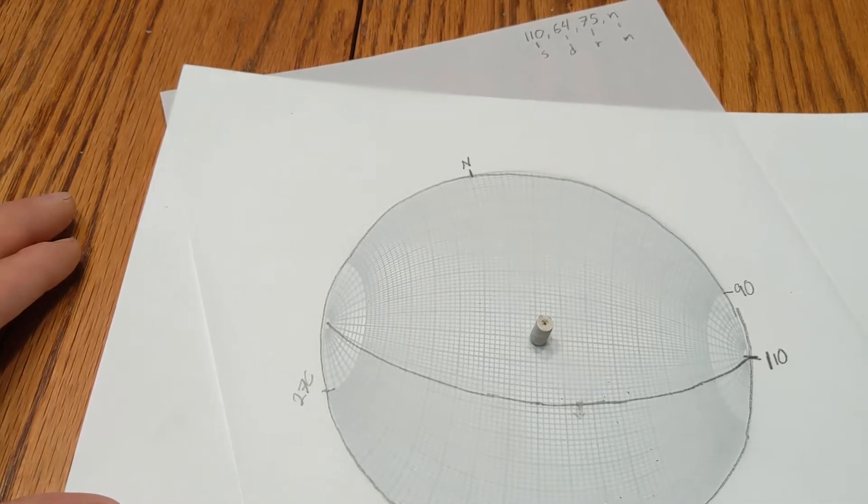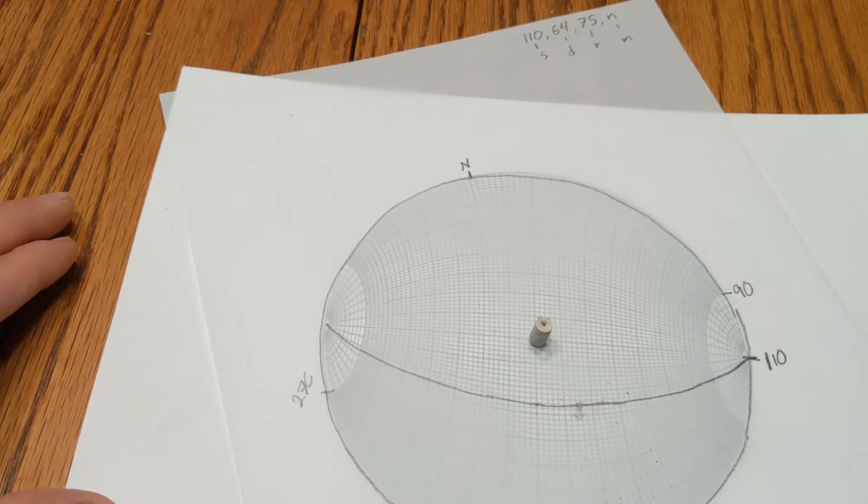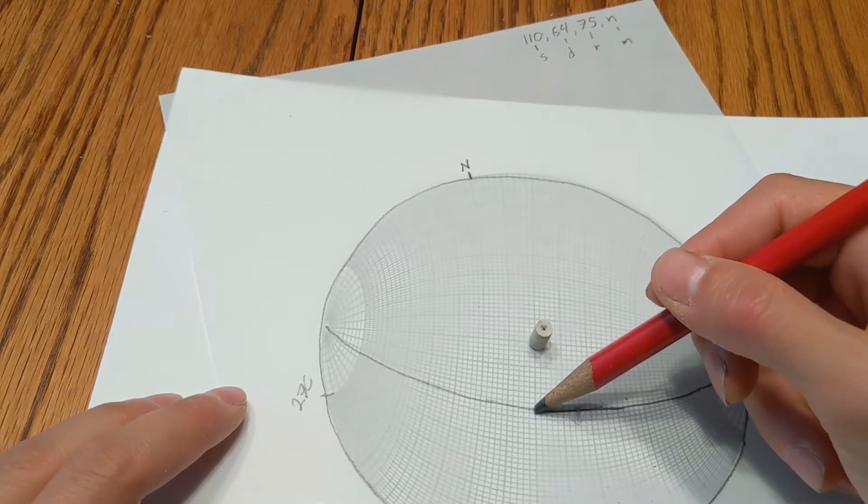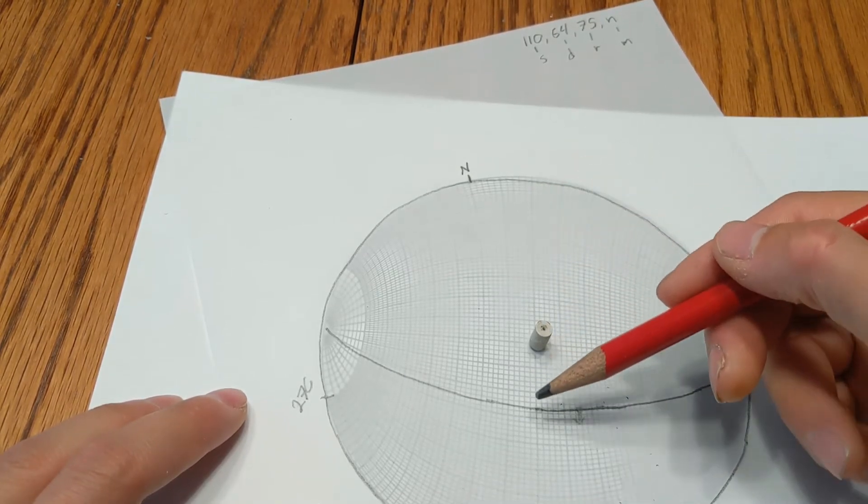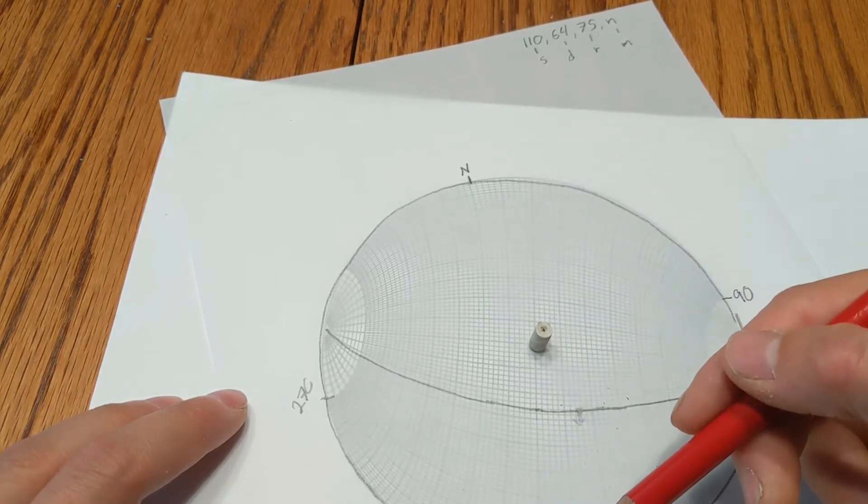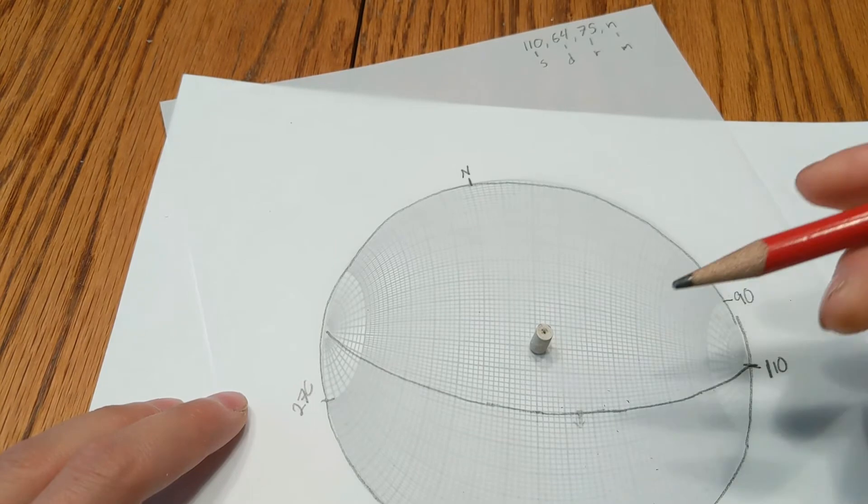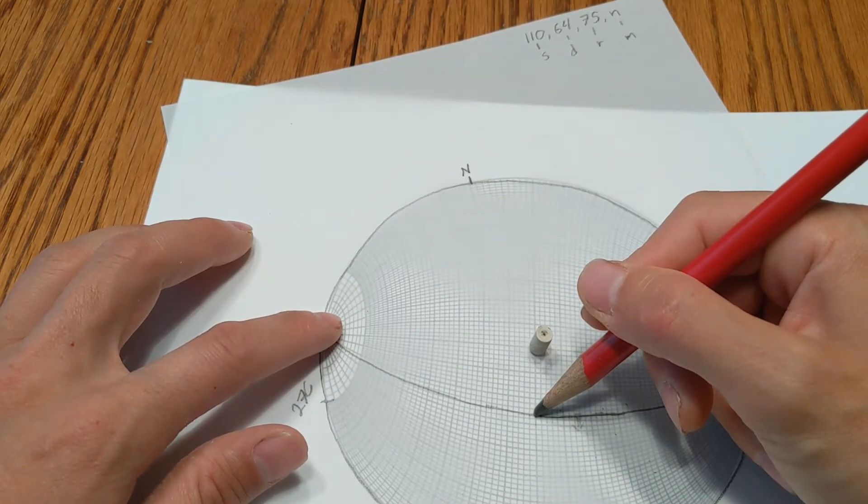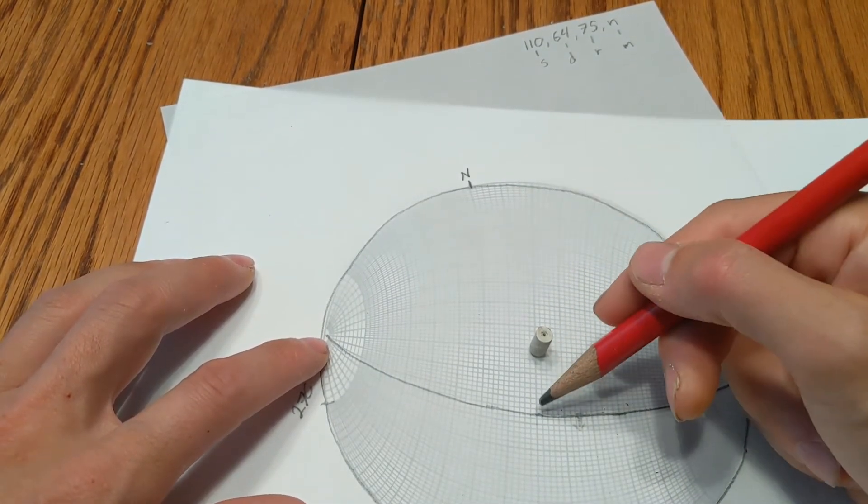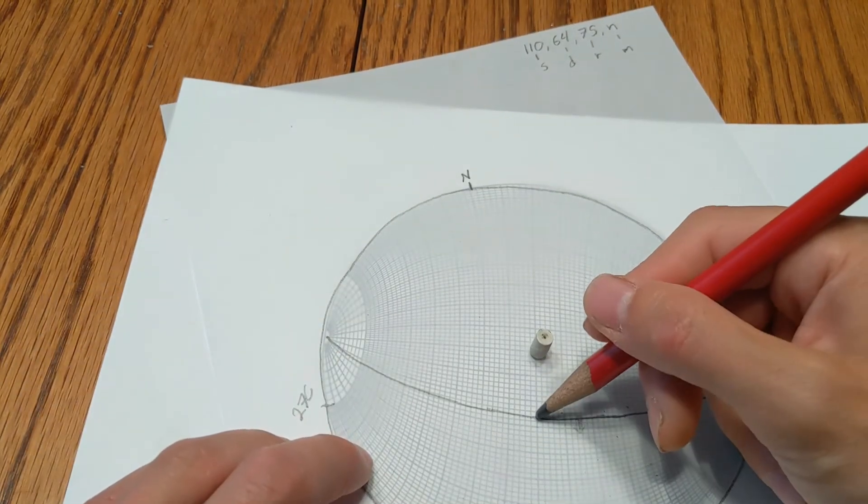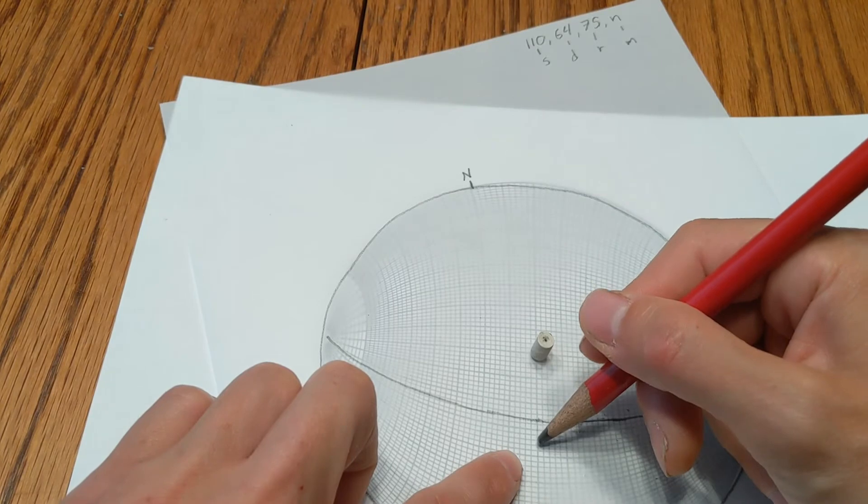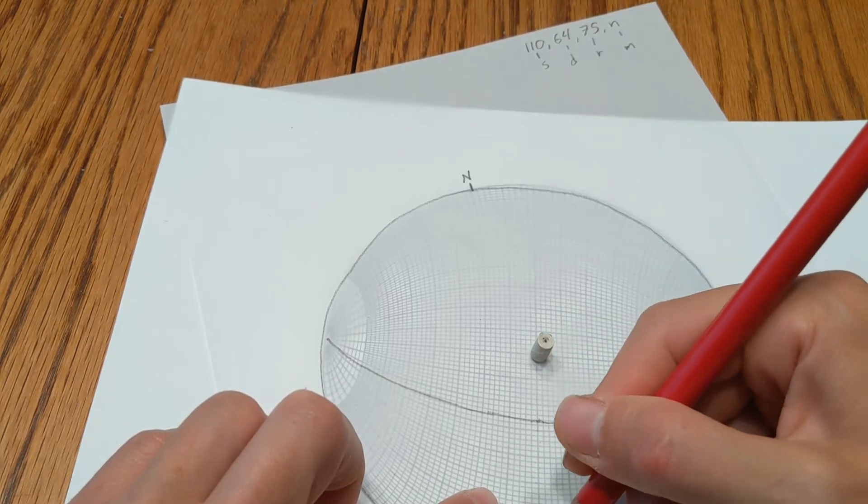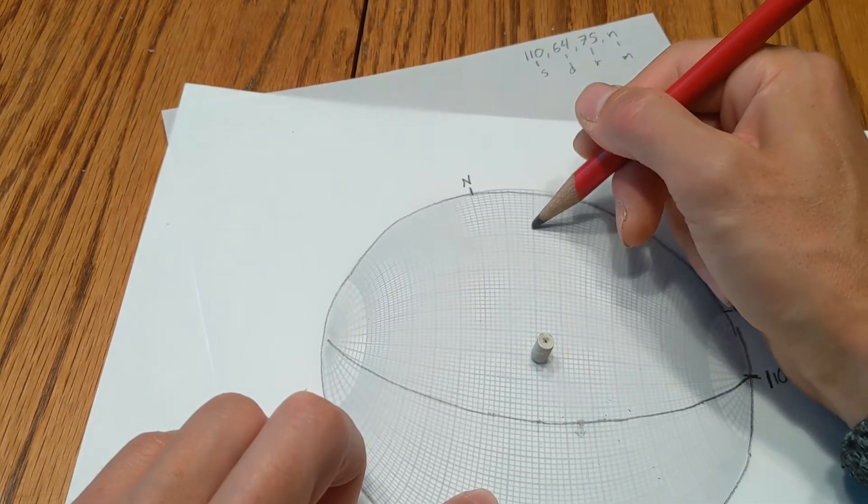Alright, so the next step is to plot the pole to the plane. And to do that, we go from this point right here. So this middle line, we're using this middle line along the small circles. And we are going to then use the great circles and plot 90 degrees from that. We can go either 90 degrees up or 90 degrees down. So once again, using the great circles, we go 10, 20, 30, 40, 50, 60, 70, 80, 90. And we end up there.